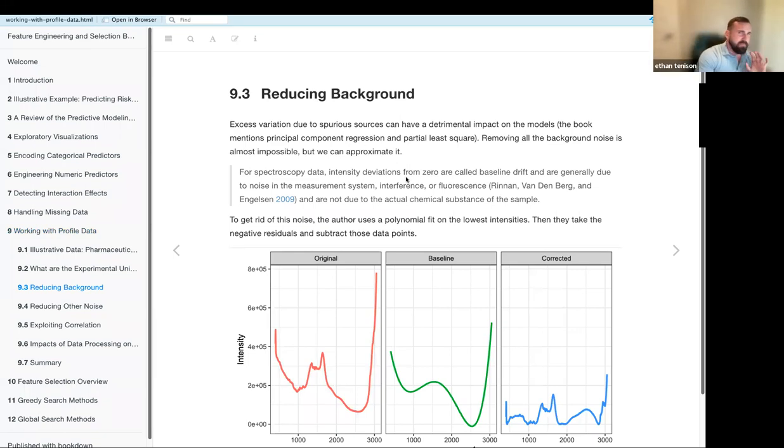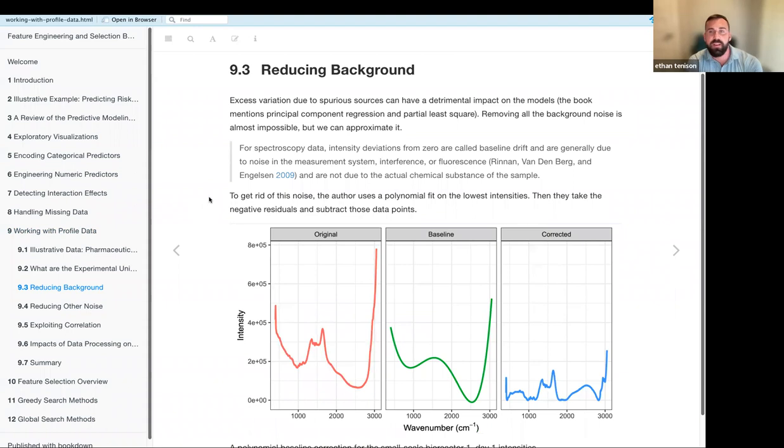So the first thing we're going to do, and there's like, I think, six different steps that they suggest. But the first step to reduce that background noise, they use a polynomial fit. And I should back up and say that this is specific to spectroscopy data, but the intensity deviation, so the deviations in the energy from zero are called the baseline drift. And this deviation is normally due to things outside of the control of the researcher.